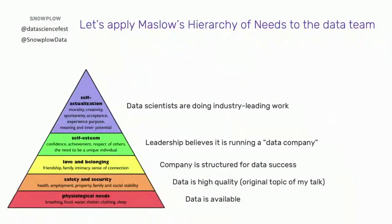Applying Maslow's hierarchy of needs to the data team: it starts at the bottom with physiological safety - for us in the world of data, that is data is available. That is the most basic thing. If data is not available, we can't do our job. The level above that is safety and security: the data needs to be high quality, it needs to be safe to use.